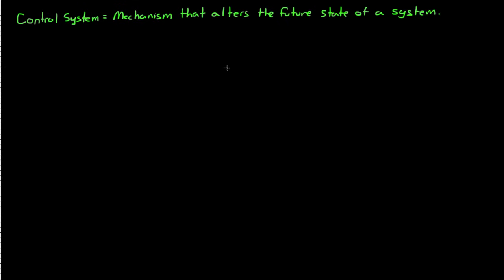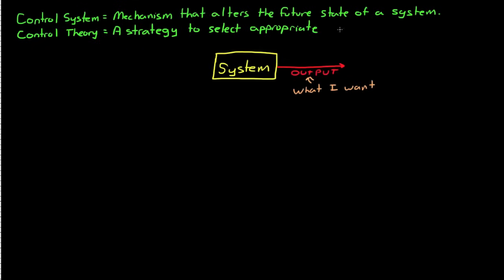In order to be considered a control system and not simply a change-the-state system, the behavior or the outcome must tend towards a state that is desired. Control theory is a branch of mathematics that is concerned with the strategy to select the appropriate input, or to put it another way, it deals with how to go about generating that outcome.